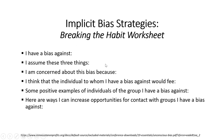This is the Breaking the Habit worksheet — a tangible activity to identify some of your biases and strategies on how to negate the negative inappropriate ones. You can address these questions: I have a bias against who or what; I assume these three things about that person or situation; I am concerned about this bias because why; I think that the individual to whom I have a bias against would feel what; some positive examples of individuals of the group I have a bias against; and here are ways I can increase opportunities for contact with groups I have a bias against.